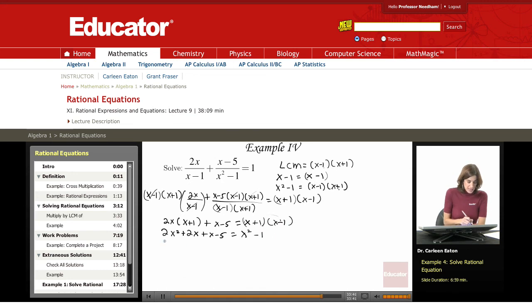Now, do some more simplifying. I have 2x squared. 2x plus x is 3x minus 5 equals x squared minus 1. Subtract x squared from both sides. That's going to give me x squared plus 3x minus 5 equals negative 1.